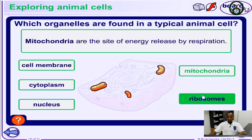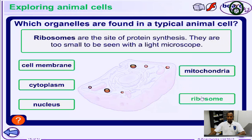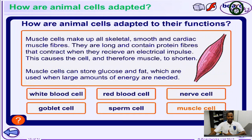What are the ribosomes? The ribosomes are the site for protein synthesis — that's where proteins are being produced. They are too small to be seen with a light microscope, so you need a bigger, more powerful microscope to see your ribosomes.